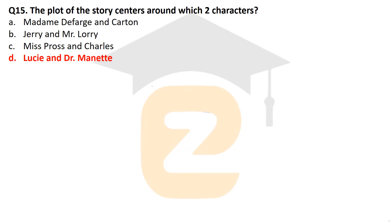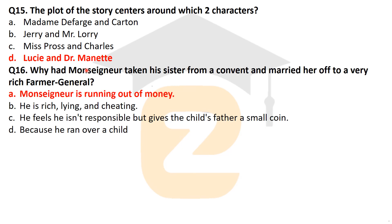The next question: the plot of the story centers around which two characters? They were Lucy and Dr. Manette. Lucy Manette was the daughter of Dr. Manette. The whole story of A Tale of Two Cities revolves around these two characters — what happens in their lives, how they react to situations, and whom they meet.